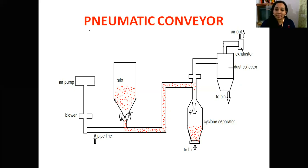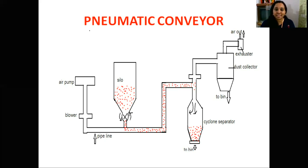When the conveyor ends, there is a cyclone separator. The cyclone separator is used to separate the stream of suspended particles. When the air is separated in the cyclone separator, there is a fine fraction of particles removed. There is also a bag filter.